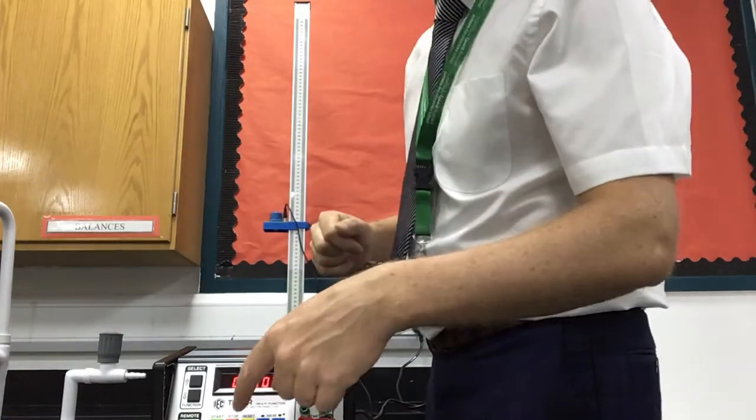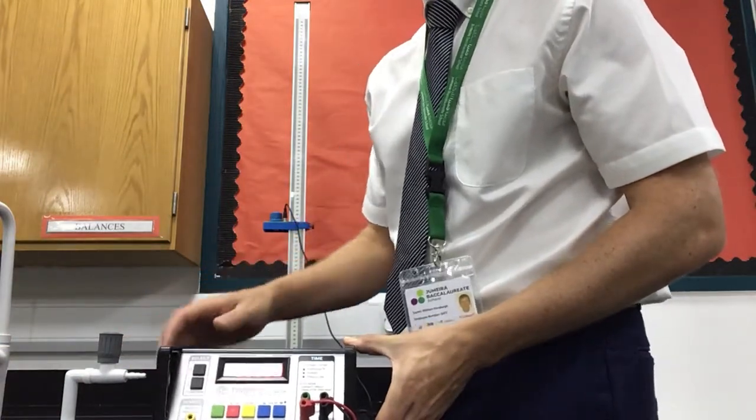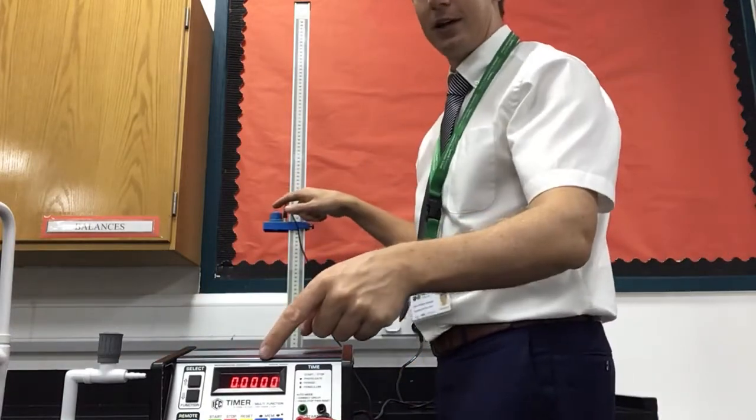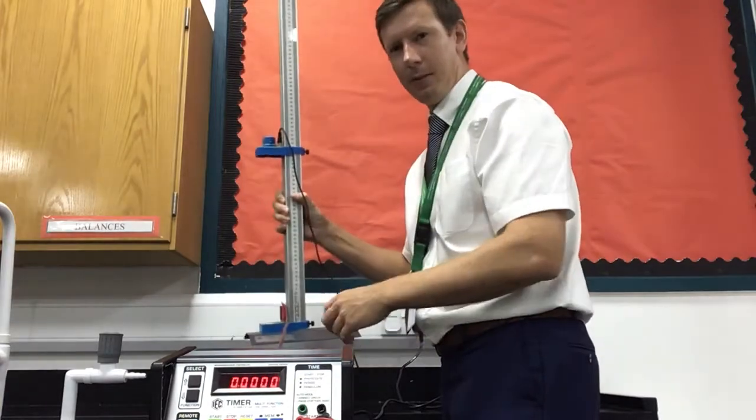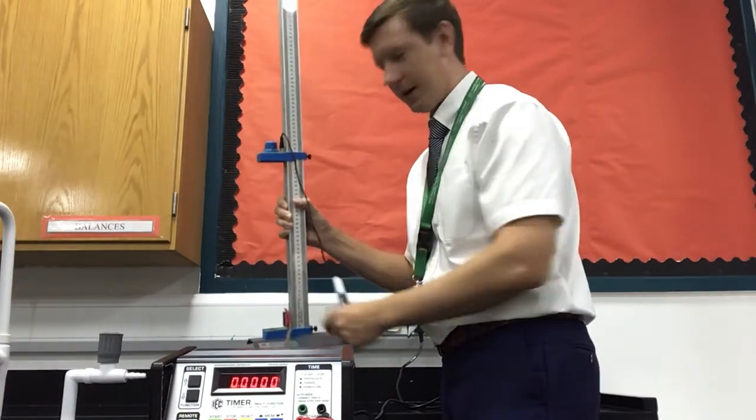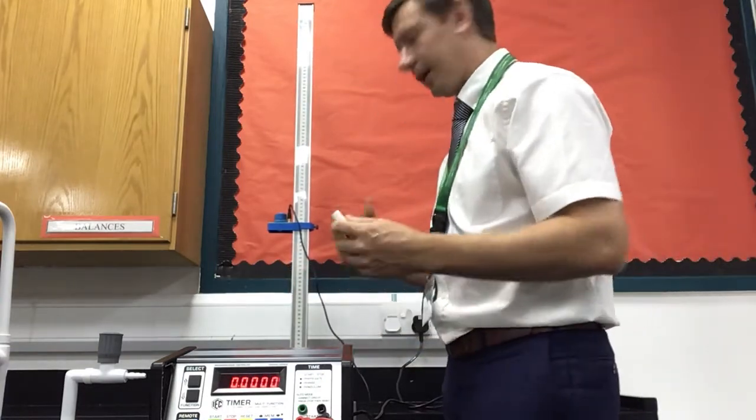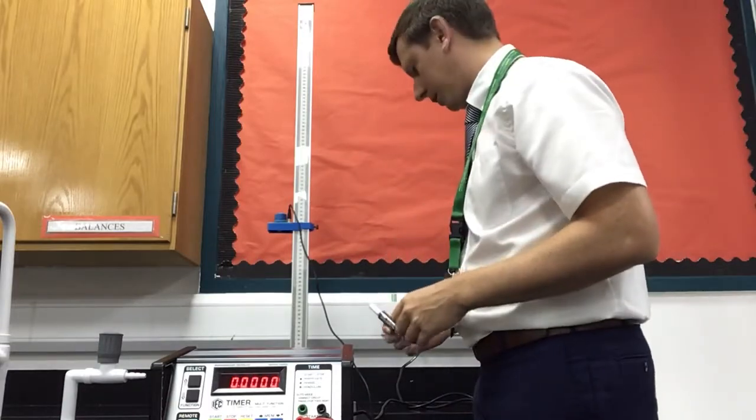When I press the green button for start, it releases the ball and starts the timer at the same time. And then there's a pad at the bottom that will stop the timer. And up the side is the scale so I can measure how far I'm dropping the ball.